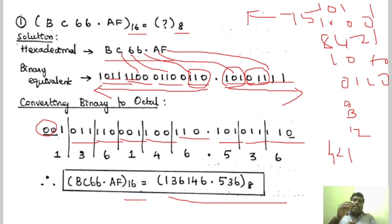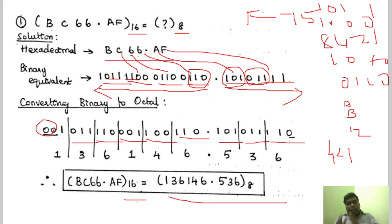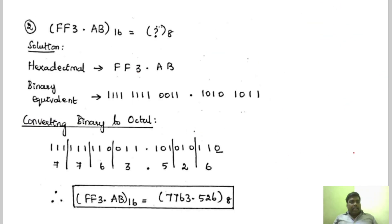The same steps, only a small change is required. First, we need to convert the hexadecimal to binary. And then the binary is converted to octal. And this is another problem — FF dot AB3 — and this is a hexadecimal number. We need to convert it to octal.